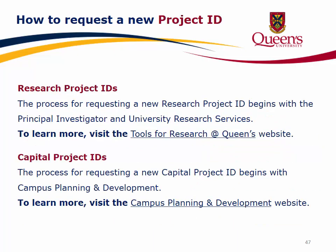How to request a new Project ID: the process for requesting a new Research Project ID begins with the Principal Investigator and University Research Services. To learn more, visit the Tools for Research at Queen's website. The process for requesting a new Capital Project ID begins with Campus Planning and Development. To learn more, visit the Campus Planning and Development website.